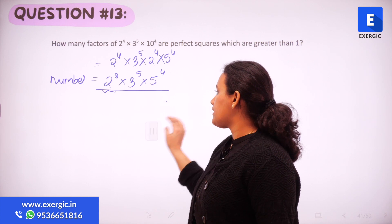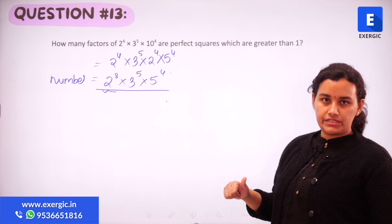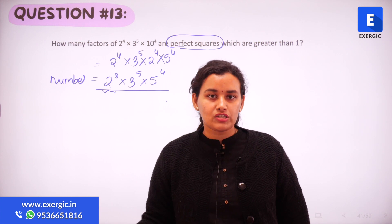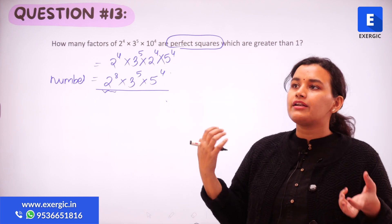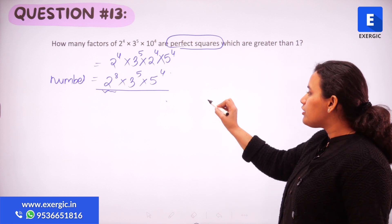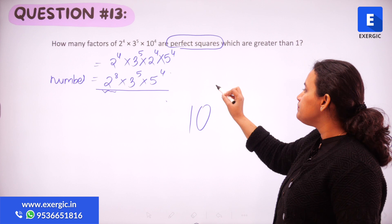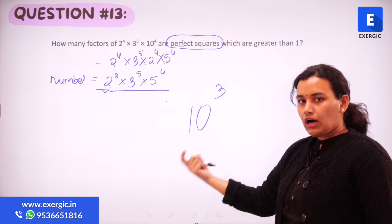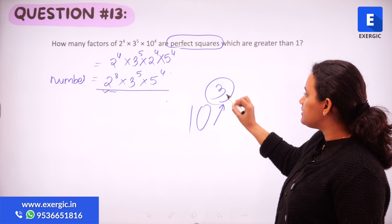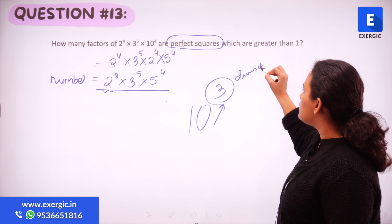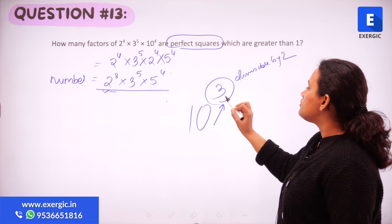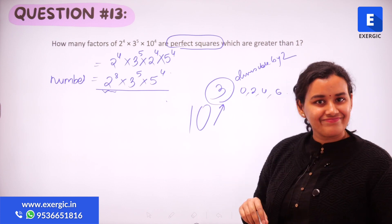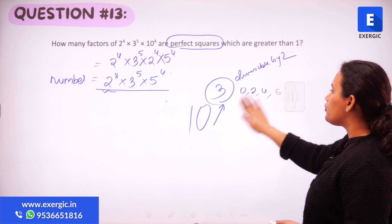However, in this question we have a constraint: the factors need to be perfect squares. How do we determine if a number is a perfect square? The power of the prime must be divisible by 2. For example, 10 raised to the power 3 is not a perfect square. The acceptable powers are 0, 2, 4, 6, and so on — only even powers.